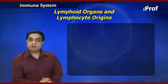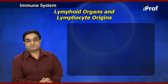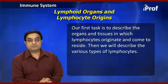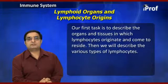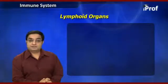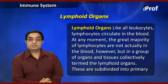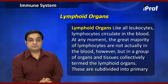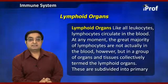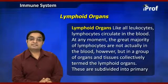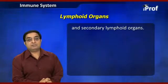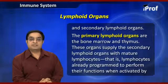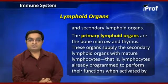We are now going to discuss lymphoid organs and lymphocyte origins. Our first task is to describe the organs and tissues in which lymphocytes originate and reside, and then the various types of lymphocytes. Like all leukocytes, lymphocytes circulate in the blood, but at any moment the great majority are not actually in the blood — they reside in organs and tissues collectively termed the lymphoid organs, subdivided into primary and secondary lymphoid organs. The primary lymphoid organs are the bone marrow and thymus, which supply the secondary lymphoid organs with mature lymphocytes already programmed to perform their functions.